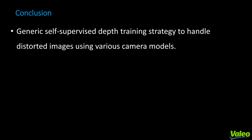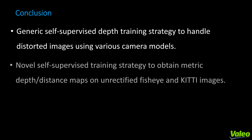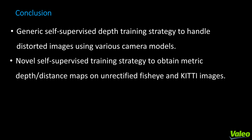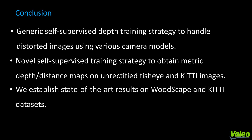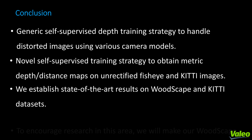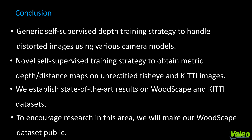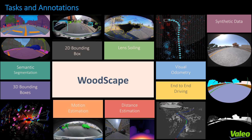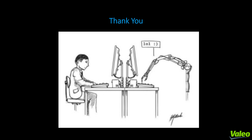To conclude, we introduce a generic self-supervised structure-from-motion training strategy to handle distorted images using various camera models. Our novel self-supervised training strategy obtains metric depth or distance maps on unrectified fisheye and KITTI images. We also establish state-of-the-art results on WoodScape and KITTI datasets. To encourage further research in this area, we will make our WoodScape dataset public, including different perception tasks and annotations with distance estimation being part of it. Thanks everyone for your interest in our work. Kindly check out our paper, UnRectDepthNet.